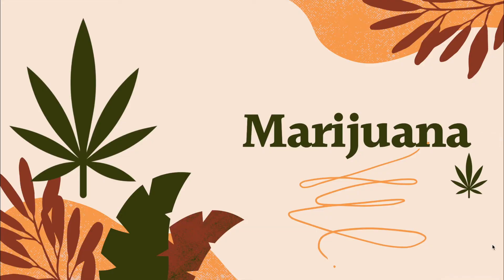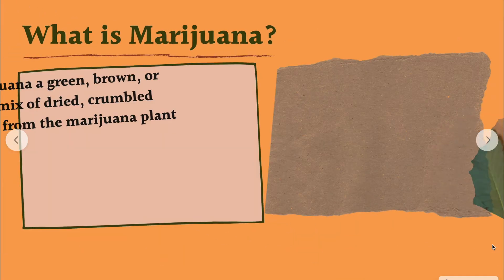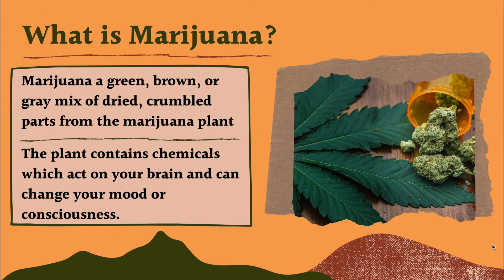Let's get started talking about marijuana. First, I want to discuss what marijuana is and give it a good definition. A lot of you may have heard this word before but may not be a hundred percent sure what it is. Marijuana is a plant — it comes from the marijuana plant. You can see a picture of it on the right, with all those leaves.